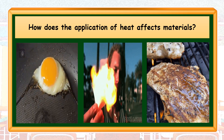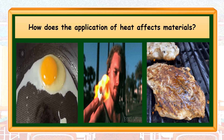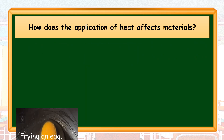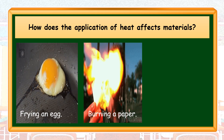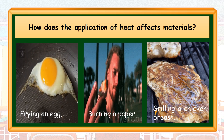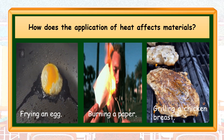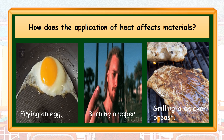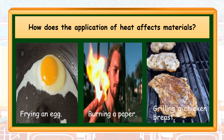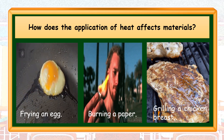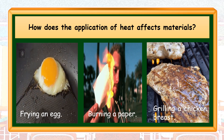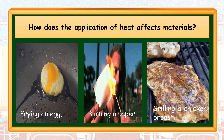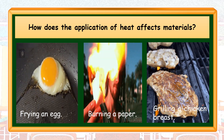How about this second set? Let's observe and investigate the second set of illustrations. What do you think they have in common? Frying an egg, burning a paper, grilling a chicken breast. These three examples also show the presence of heat. The three exhibit changes in their physical appearance and at the same time in their chemical structure as heat is applied on the material. We cannot turn them back to their original state. Therefore, frying an egg, burning a paper, and grilling a piece of chicken breast on hot flaming charcoal are examples of chemical change with the application of heat.